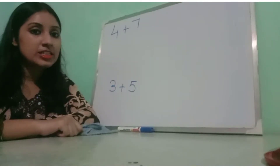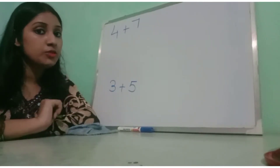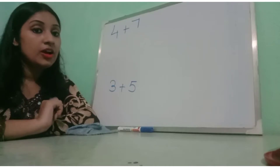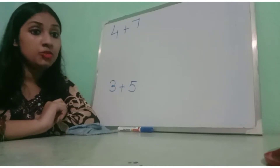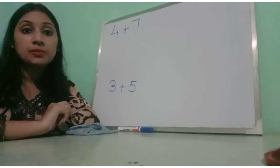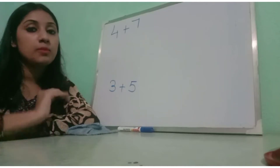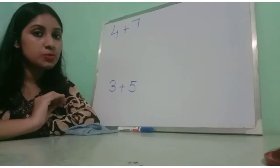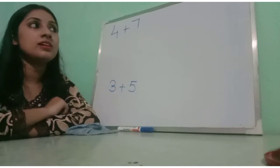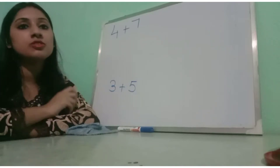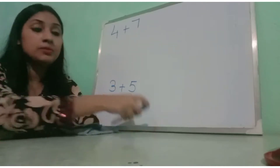तो आज की explanation में number lines को use करके हम कैसे one digit की addition कर सकते हैं। क्योंकि जब हम छोटे रहते हैं, बच्चे एकदम small होते हैं, तो उन लोग के लिए number lines को use करके addition करना easy होता है।